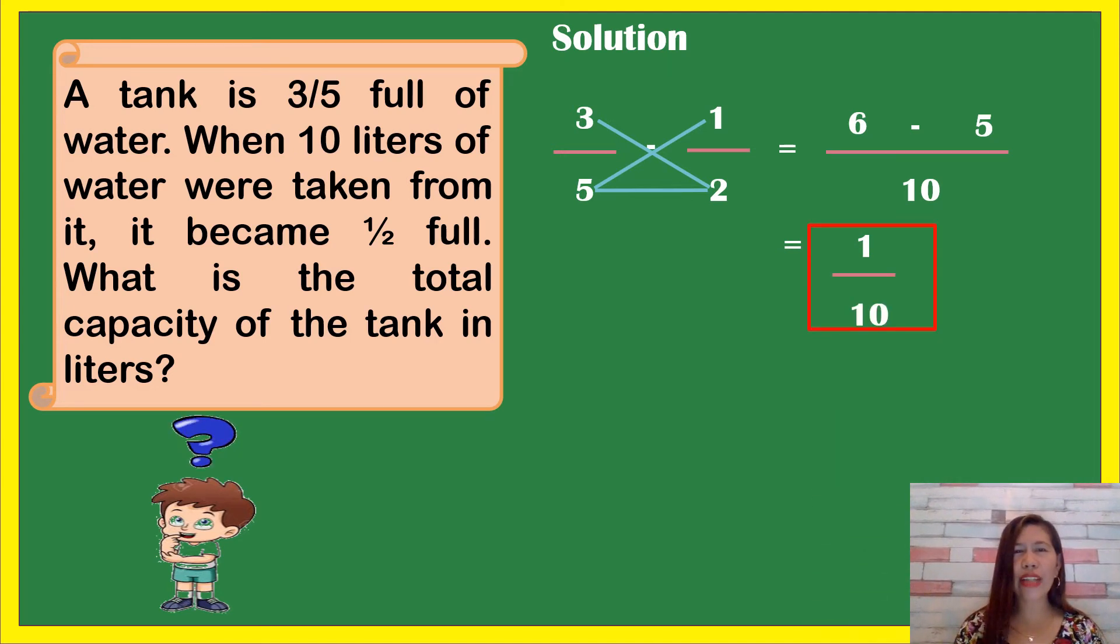So 1/10 is the fractional part of 10 liters. To get the total capacity, we're going to divide 10 divided by 1/10.